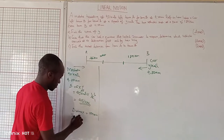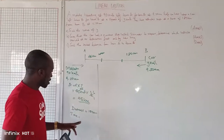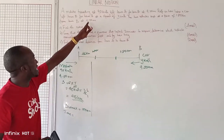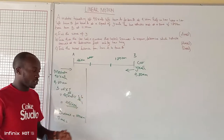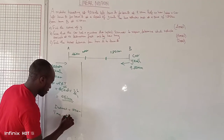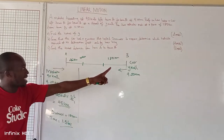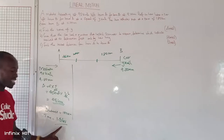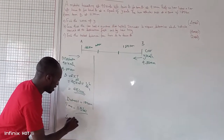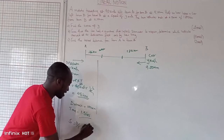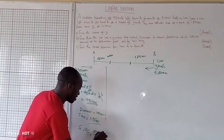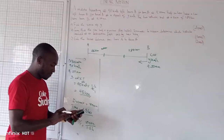We calculate the time from 9:30 am to the meeting time of 11 am: 11 am minus 9:30 am equals 1.5 hours. So it took 1.5 hours for them to meet after the car started. Speed equals distance over time: 180 km divided by 1.5 hours.